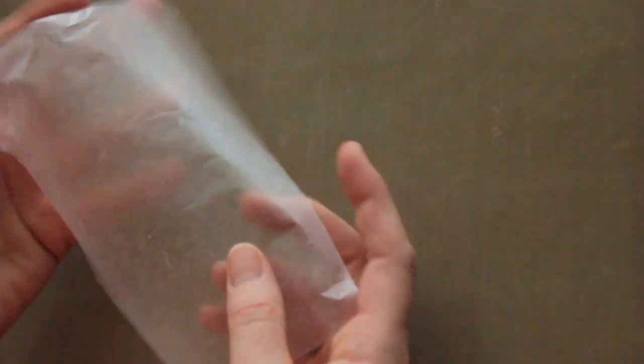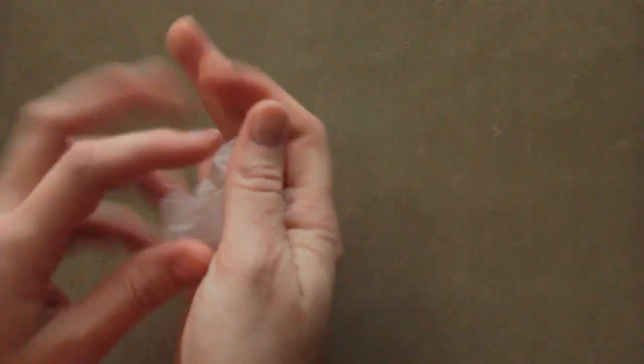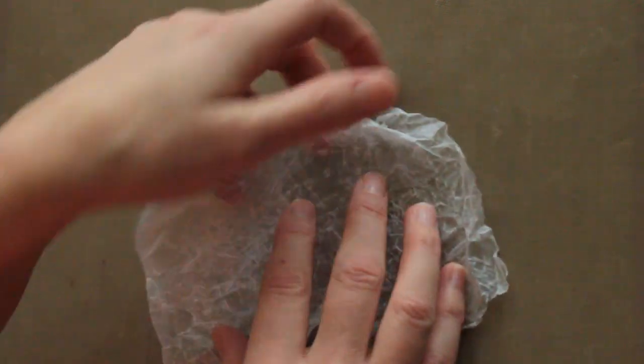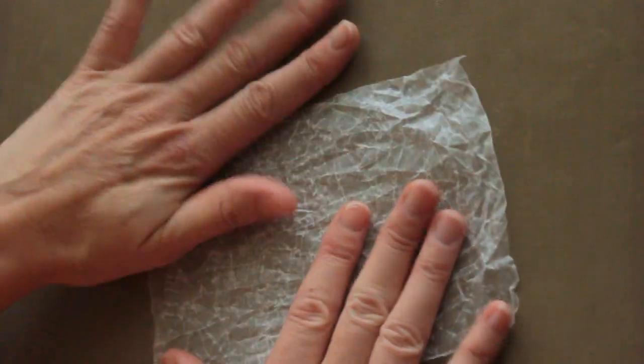First, you will need some wax paper, and then just crumple it up and smooth it back out. Now you'll have these lines, and that will be on your glossy cardstock later.